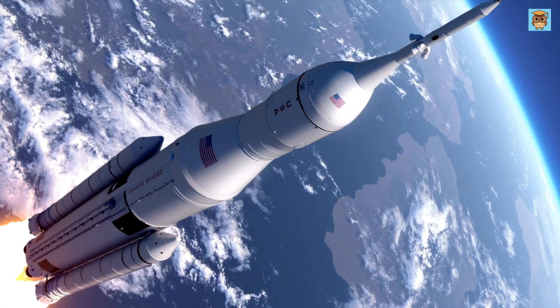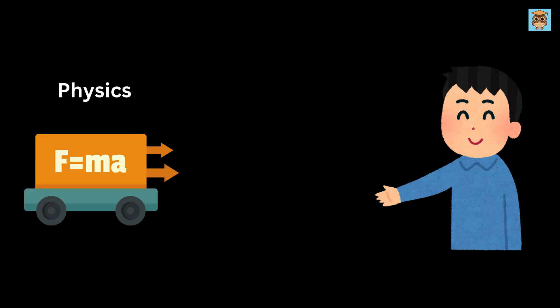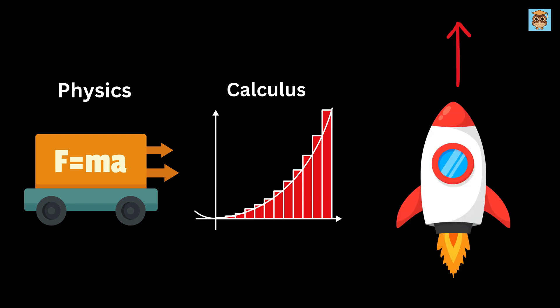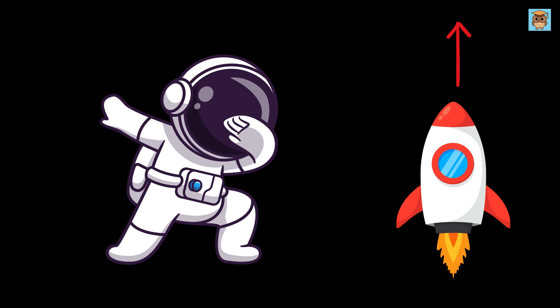Rockets are amazing machines, but do you know that their motion is super tricky? What if I tell you that with just basic physics and simple calculus we could predict exactly how fast a rocket will move into space? Wouldn't that be fascinating?